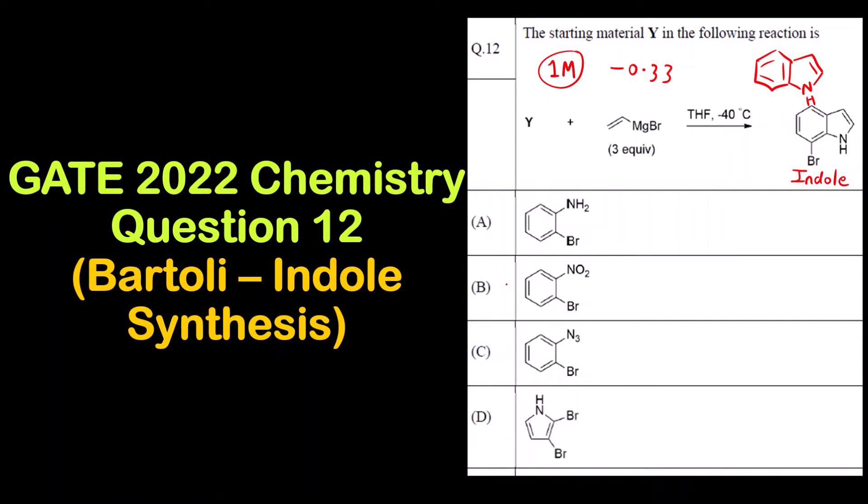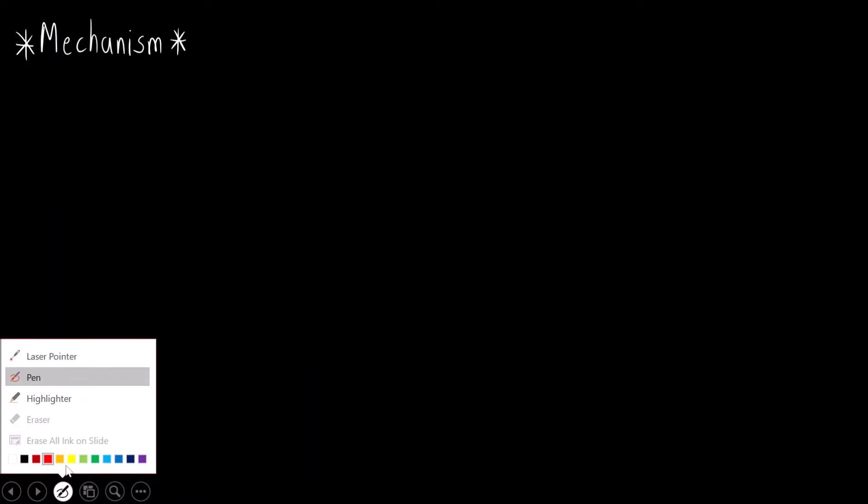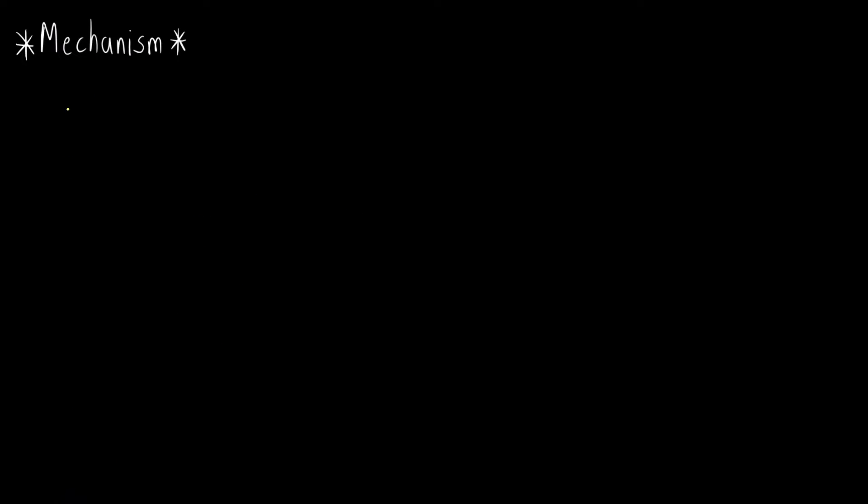So we can prepare this from the reactant, that is nitrobenzene. Now we have to see the mechanism how we can prepare. Okay, so first let me draw the reactant, that is benzene.